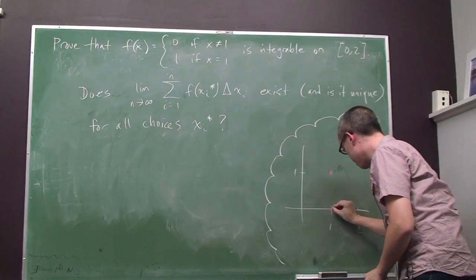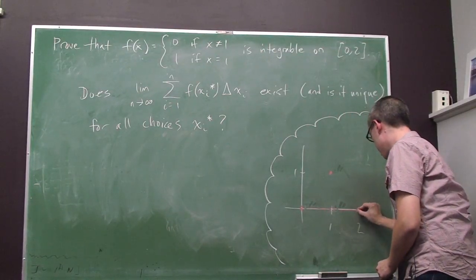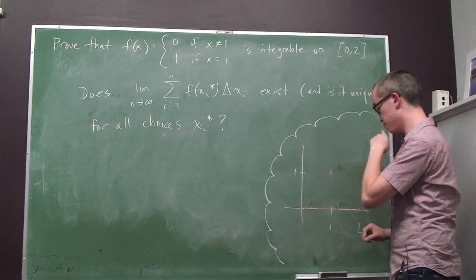Everywhere else, it takes on the value 0. So the function lives down here, except that this one value jumps up to 1.